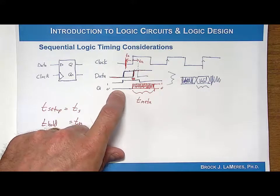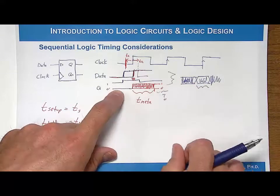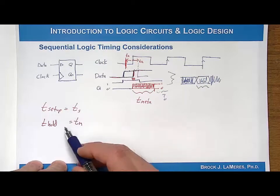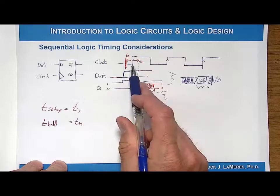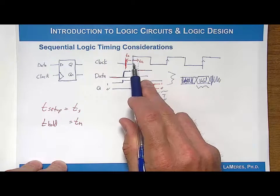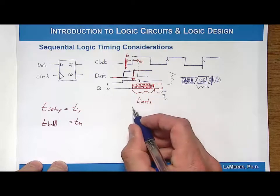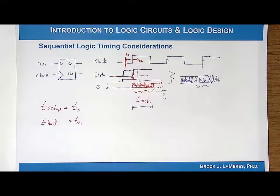Remember — very important — when you come out of metastability, you have no idea what the output is going to be; it'll be a one or a zero, but you don't know which one. Setup is violated when you change the data too close before the clock edge; hold is violated when you change it too close after the clock edge. If you do go metastable, there is a deterministic amount of time you will remain metastable, and then you will come out into an unknown state.